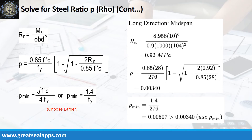Given long direction, mid-span moment equals 8.958 kN per meter. Resistance factor equals 0.9. B equals 1,000 mm. And D equals 104 mm. The beam design ratio RN equals 0.92 MPa. Reinforcement ratio rho equals 0.0034. Use rho minimum of 0.00507.